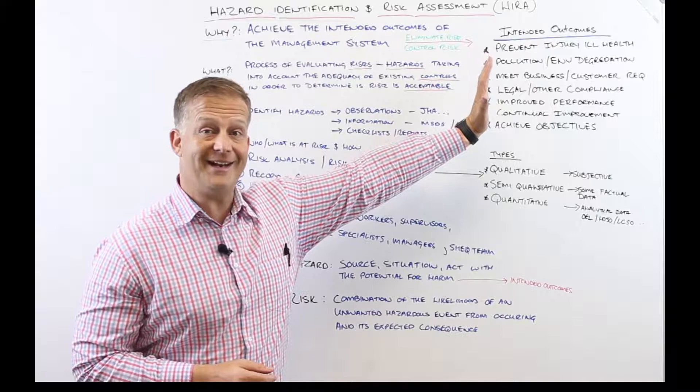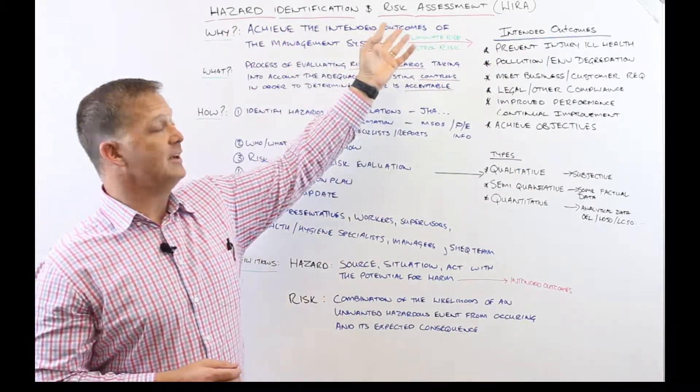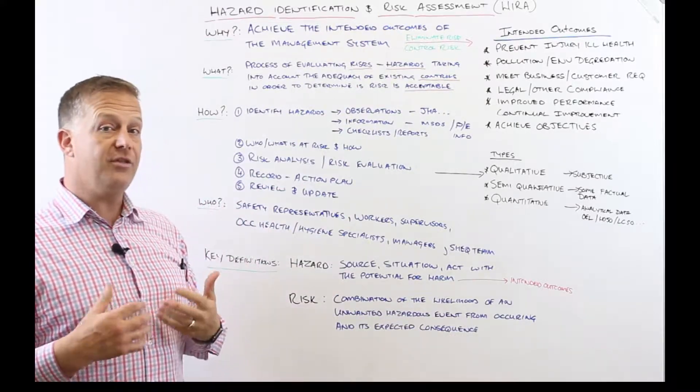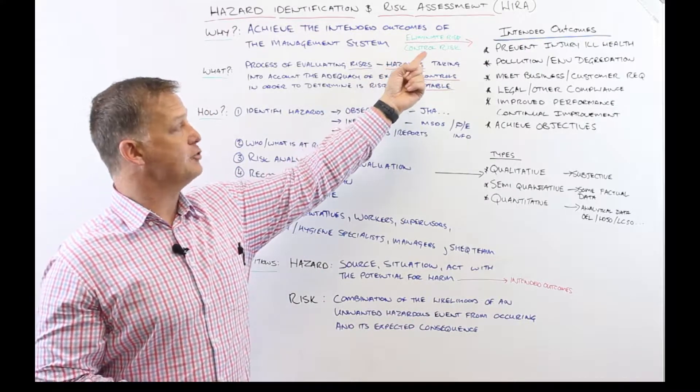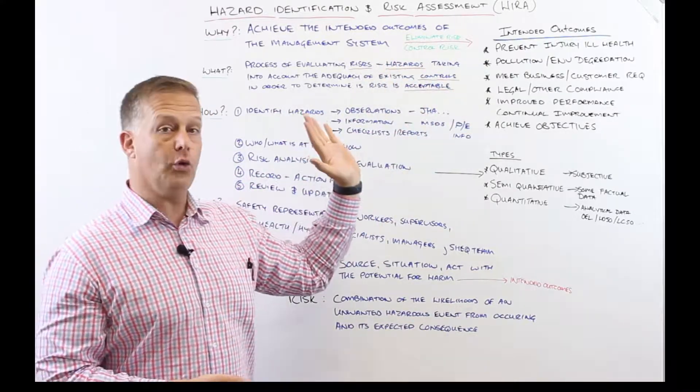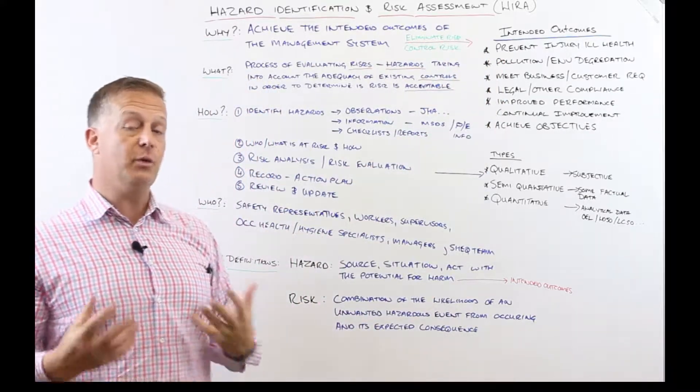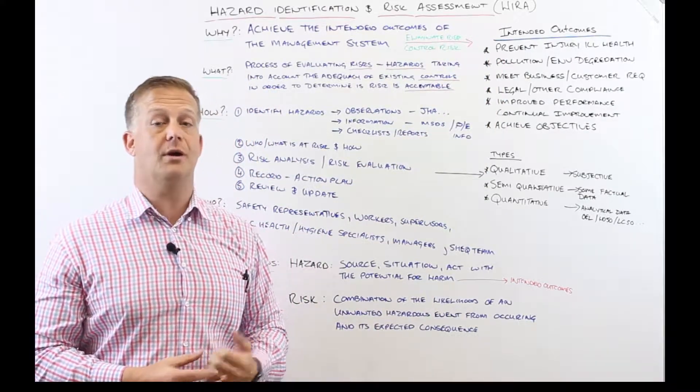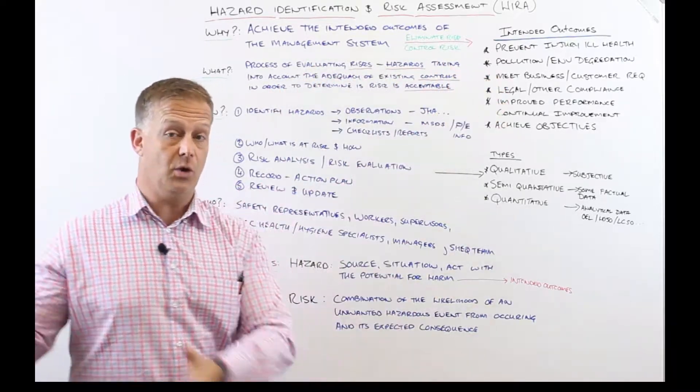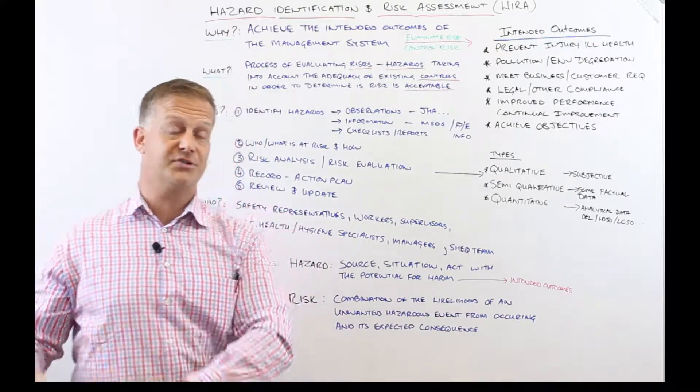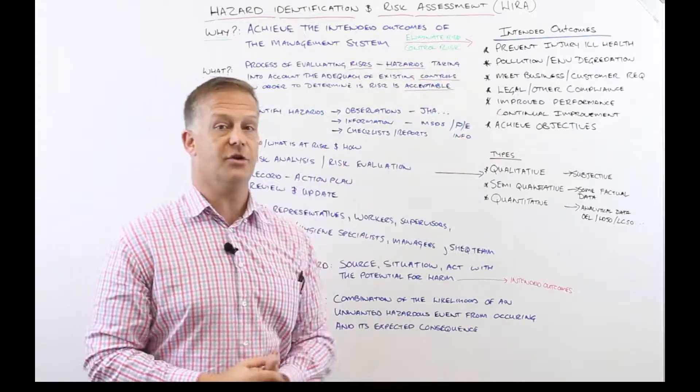If those are some of the intended outcomes of your management system, we need to identify hazards and assess risks with the idea that we want to eliminate or control risks in order to aid our management system in achieving the intended outcomes. It's all about the intended outcomes. We want to identify hazards, assess risk, and eliminate or minimize it.